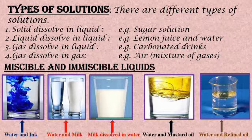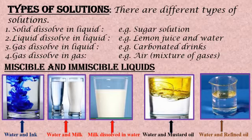The third type is gas dissolves in liquid — when carbon dioxide gas dissolves in liquid, carbonated drinks are formed. And the next type of solution is gas dissolves in gas. Air is the best example for this type of solution, as it is a mixture of many gases.